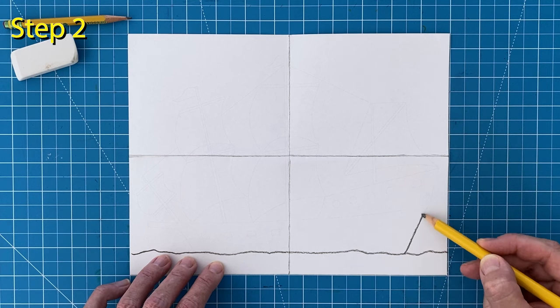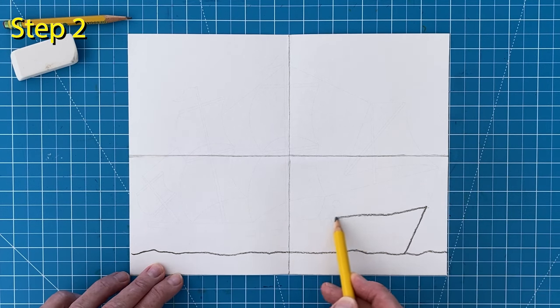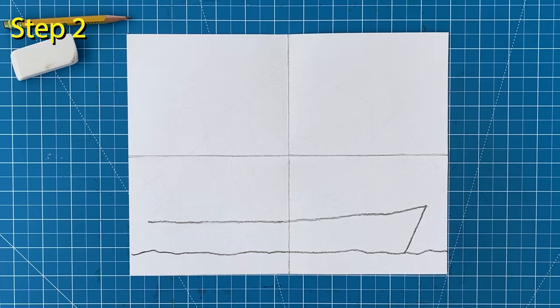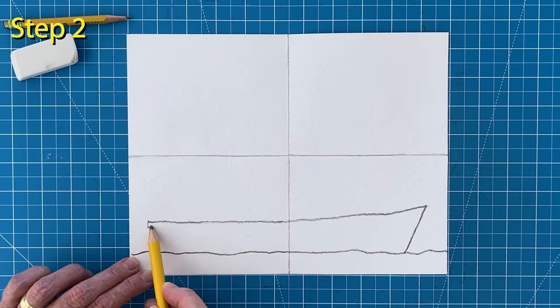Step number two. Start the bottom of the ship on the right with a line that goes up and then all the way to the left. Now finish that shape with a pointy end on the left.